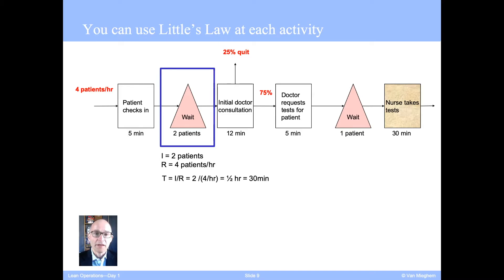We can do the same calculation for the second buffer. Maybe stop the video and try doing it yourself. However, here again, we have to be careful. While the inventory is given, one patient, we must be careful with the throughput. Remember, of the four patients on average that start the process, 25% of them quit. So we must be careful with the throughput calculations.